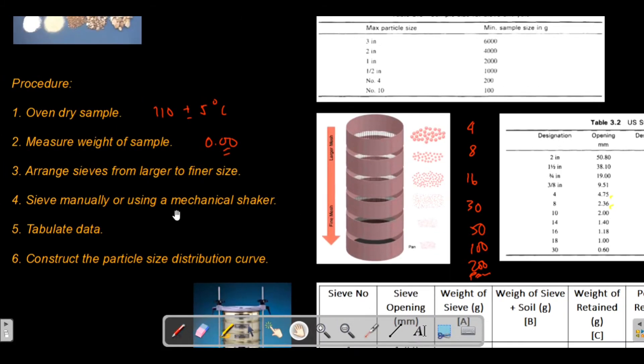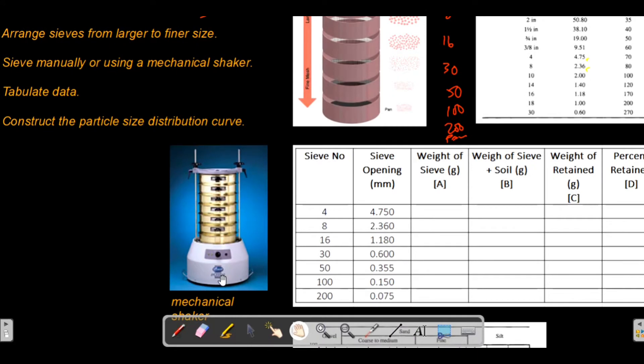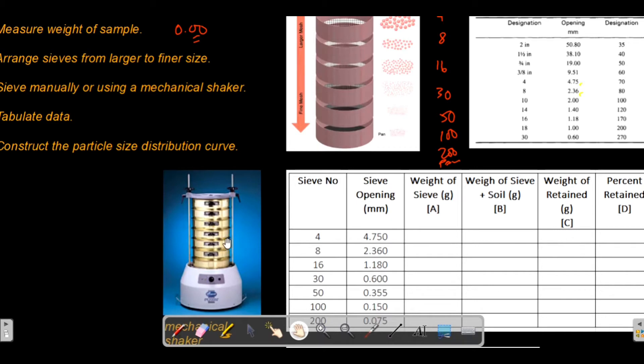After arranging your sieves, you can now shake manually or using a mechanical shaker. The mechanical shaker looks like this - it's an electrical device that you turn on. The sieves are held in these rods and the device will shake this for at least 10 minutes or more depending on the status of your soil sample. If you don't have this mechanical shaker, you can hold the sieves together and shake it manually for at least 10 minutes.